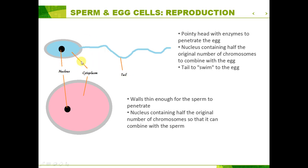Lastly, sperm and egg cells specialize in reproduction. Looking at sperm cells first: they have a very pointy head containing enzymes to penetrate the egg. The nucleus contains only half the original number of chromosomes, which makes sense because it needs to be combined with the egg nucleus to produce a new cell with the normal number of chromosomes. Lastly, it has a tail which allows it to swim to the egg, since the egg is far away and requires a lot of energy to reach. Egg cells have walls thin enough for the sperm to penetrate, and once again the nucleus contains only half the original number of chromosomes so that the full number is produced once fertilized.